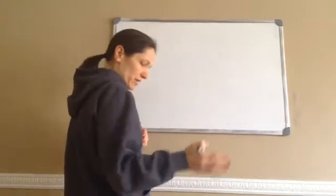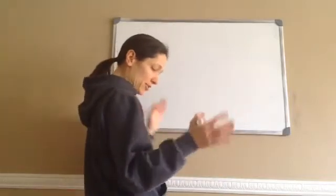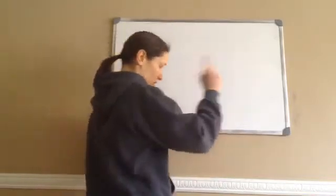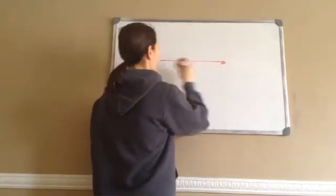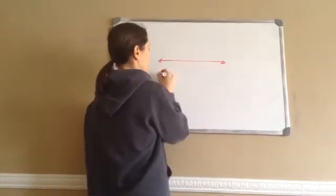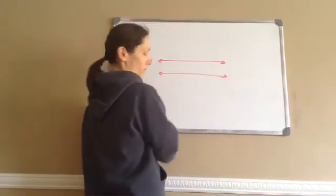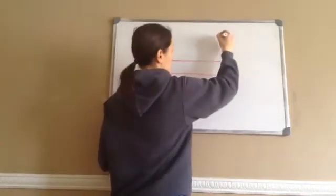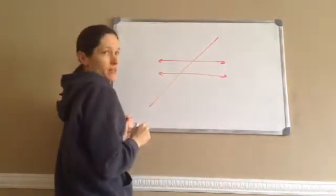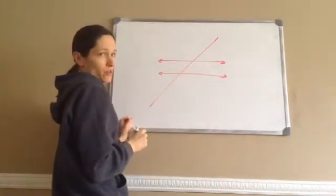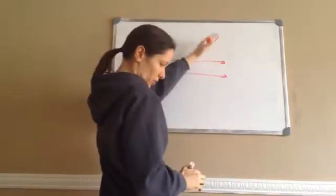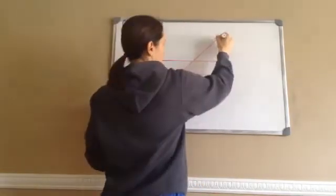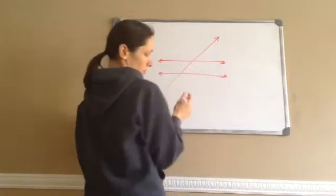A transversal is a line that intersects one or more lines in a plane. For example, we've got two parallel lines right here, and then I'm going to draw a transversal. That is the transversal — it cuts through or intersects one or more lines. That's what a transversal is.